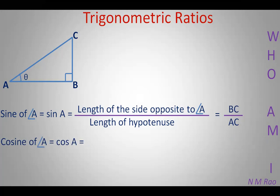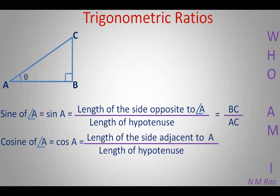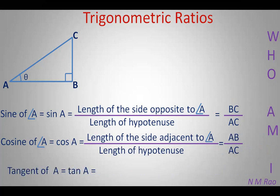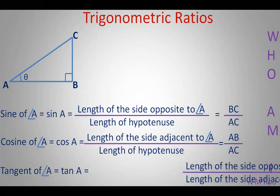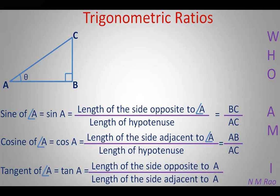The next trigonometric ratio is cosine of angle A, written simply as cos A. That is the ratio of the length of the side adjacent to angle A to the length of the hypotenuse. The adjacent side to theta is AB, so cos A equals AB upon AC. Next is tangent of angle A, written simply as tan A. That is the ratio of the length of the side opposite to angle A to the length of the side adjacent to angle A, that is BC upon AB.